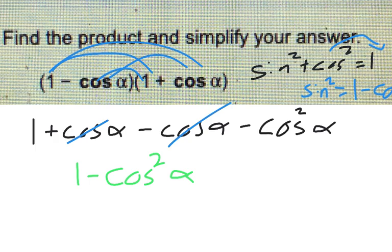And so we can substitute in. If I have 1 minus cosine squared, that's the same thing as sine squared. So my final answer here would be sine squared of alpha. I just needed one more step there.